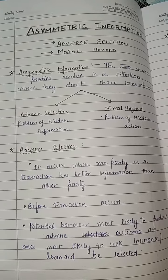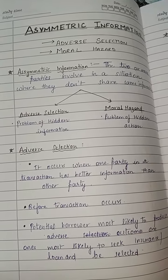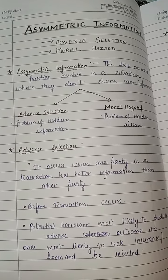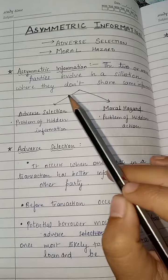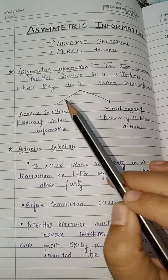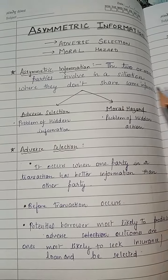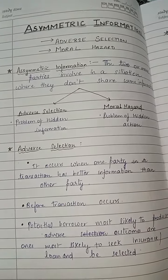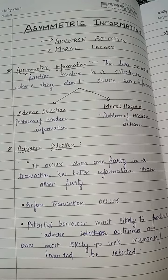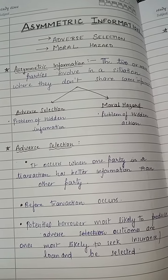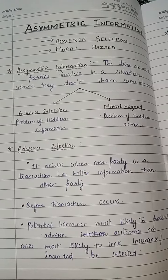Talking about what asymmetric information is — it is basically the situation where two or more parties involved don't share the same information. That means one party has more information than the other party.